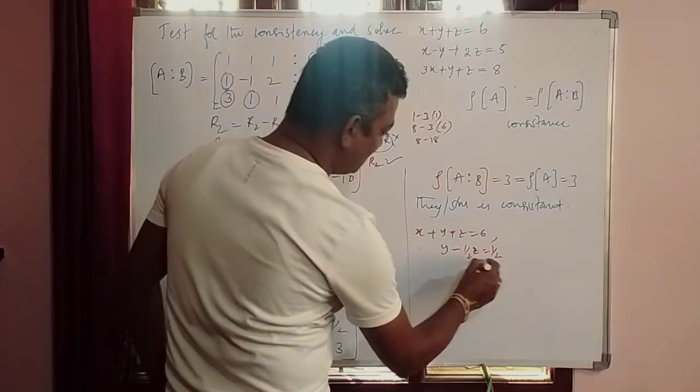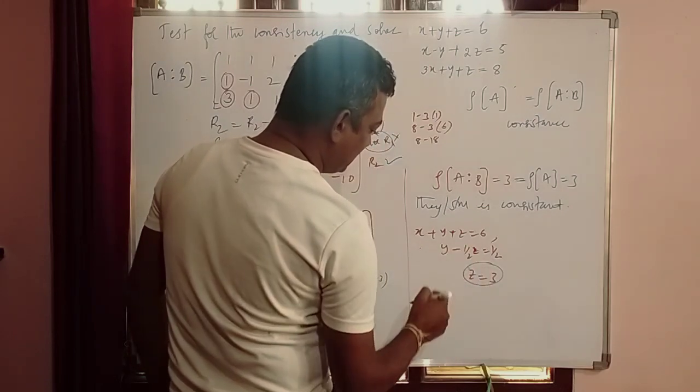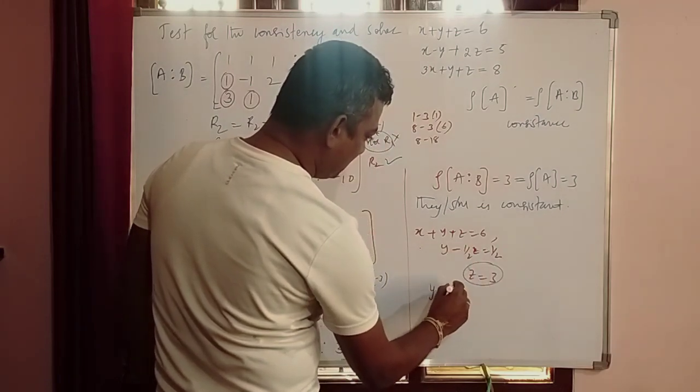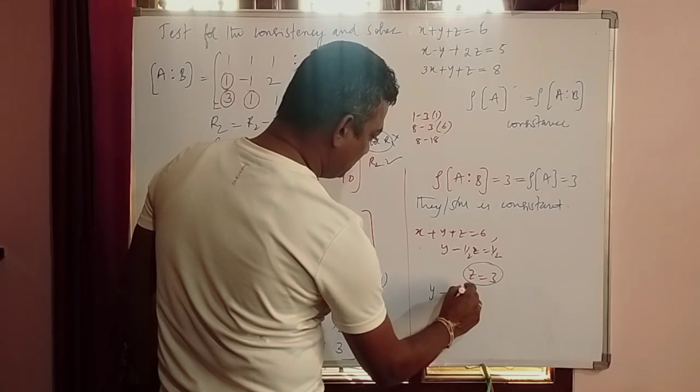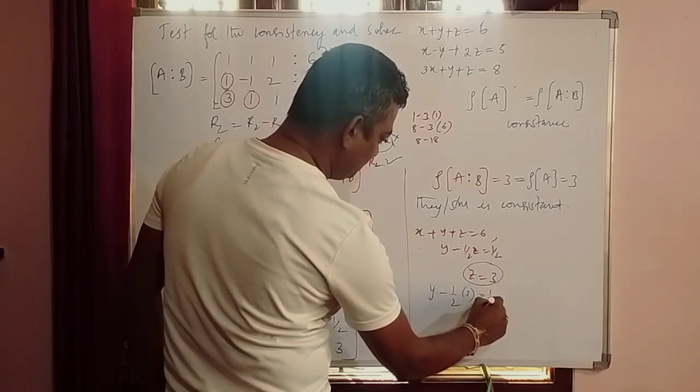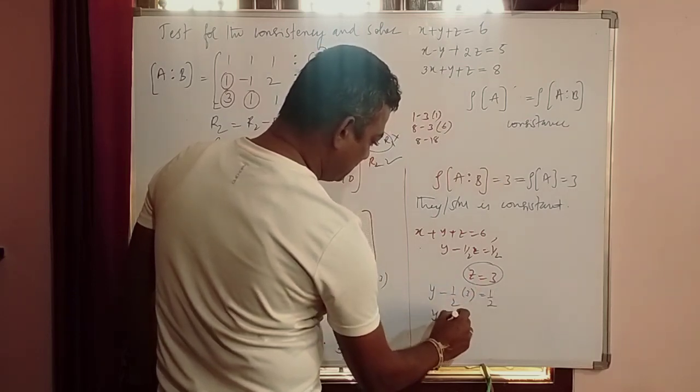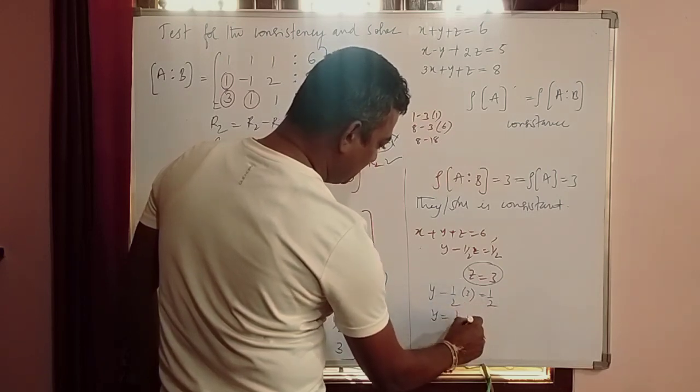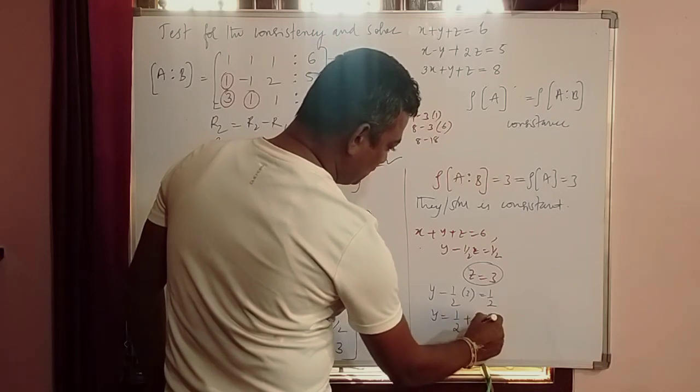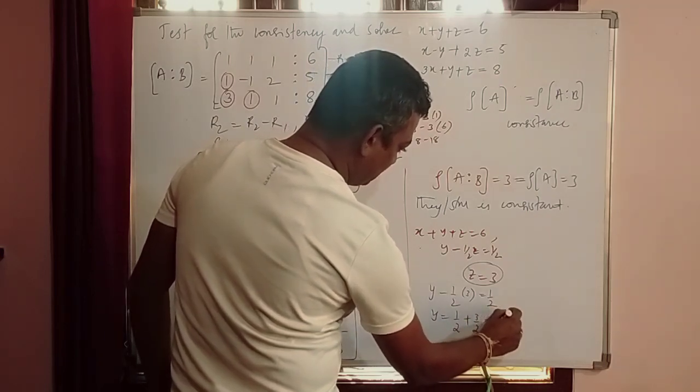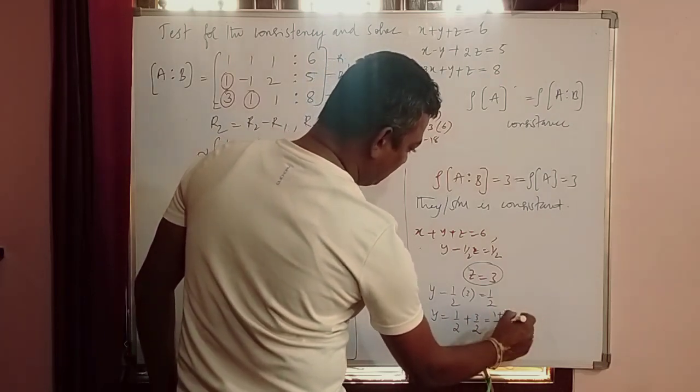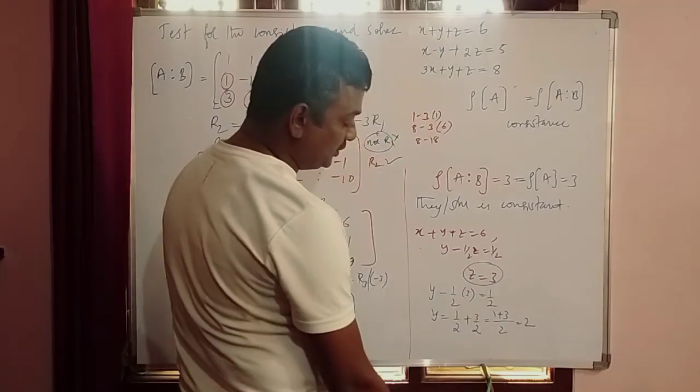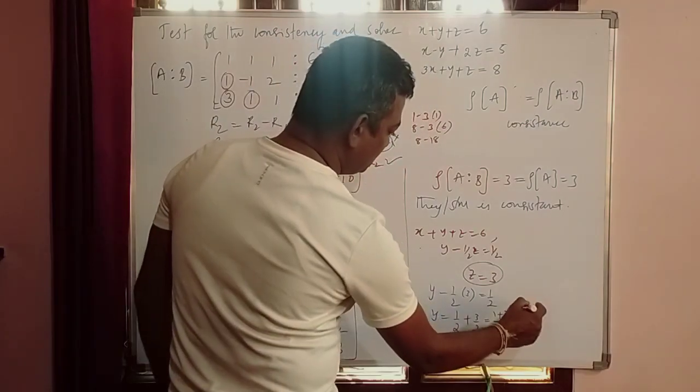So you have got z = 3. Substitute z = 3 here, you will get y - 1/2 times 3 = 1/2. So y is equal to, transform -3/2 to right side, plus 3/2. So 2 is the LCM, 1 + 3 by 2, so 4 by 2 is 2. So y = 2.